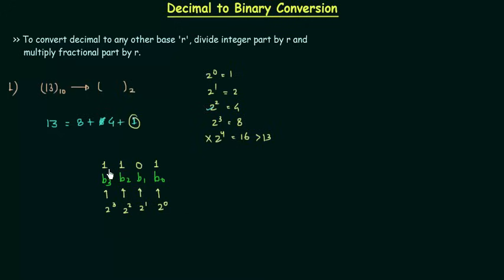So the binary number is 1, 1, 0, 1. The binary equivalent of 13 is 1101. This is the first method to find the binary equivalent of a decimal number, but this method is not preferred. We will have another, simpler method to find the binary equivalent of a decimal number.